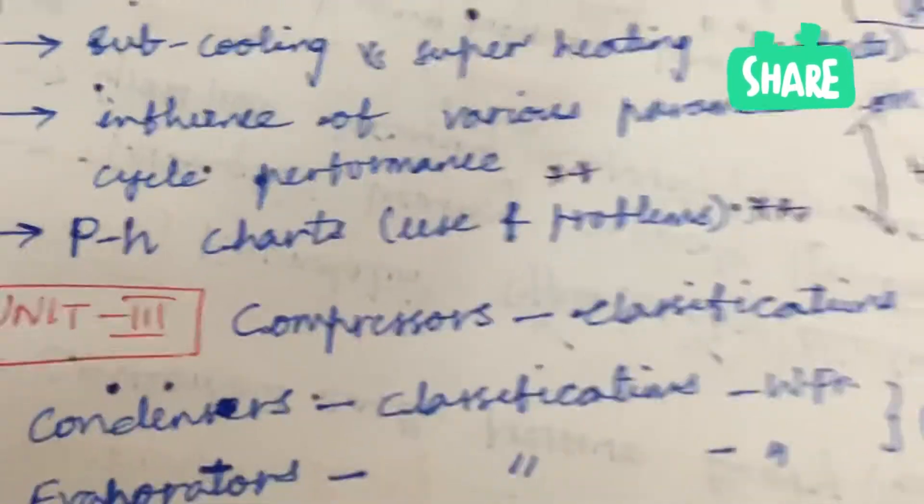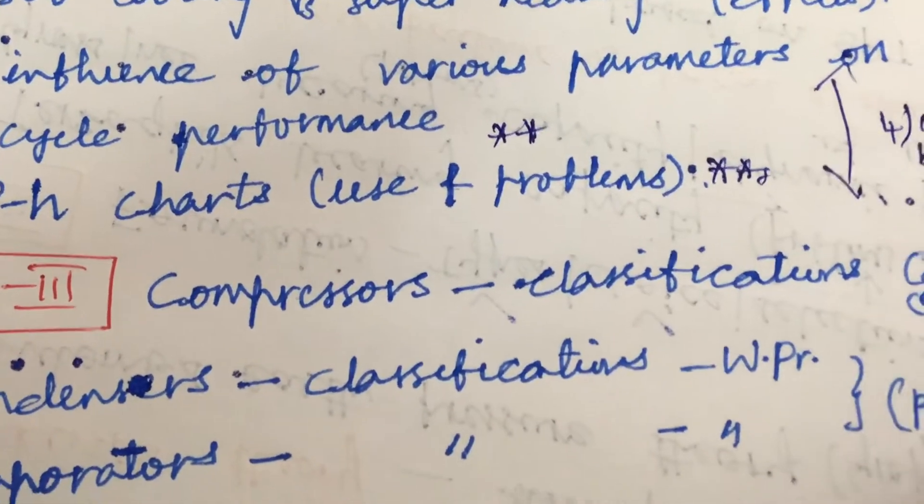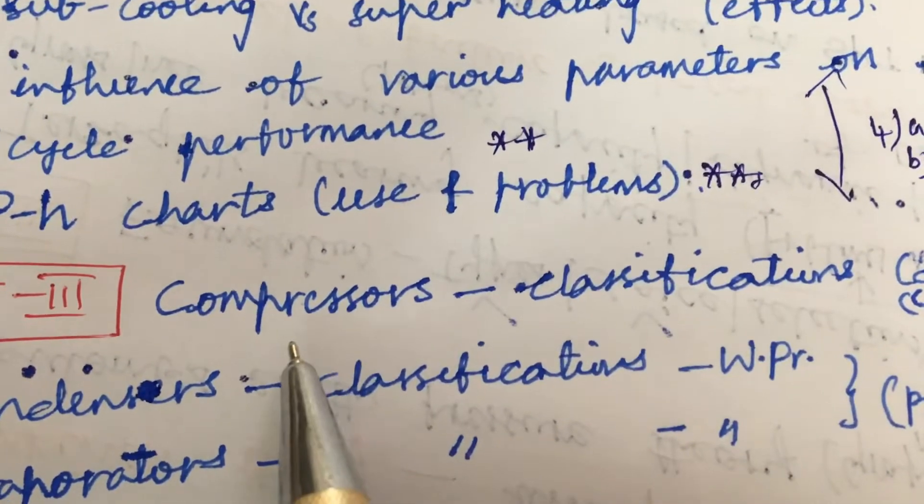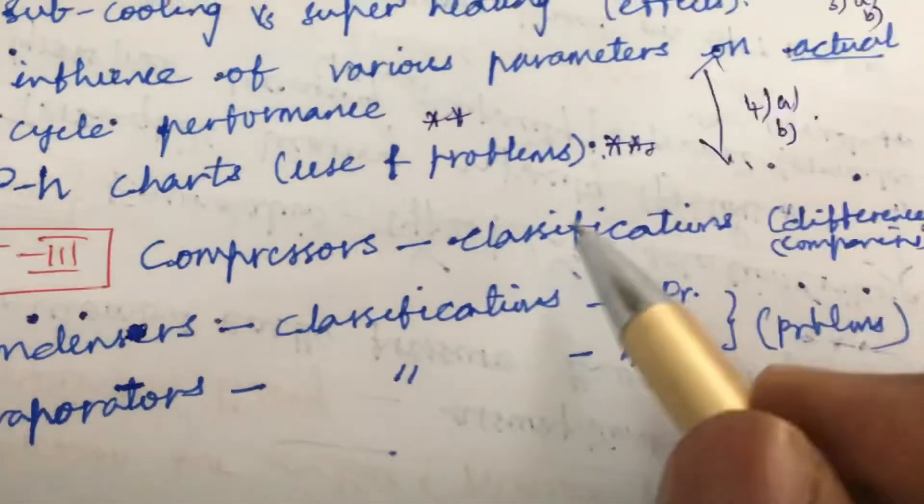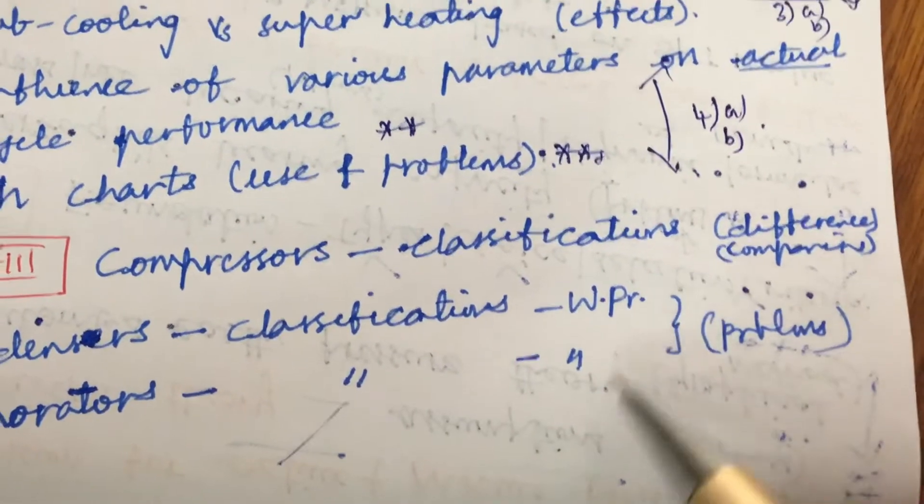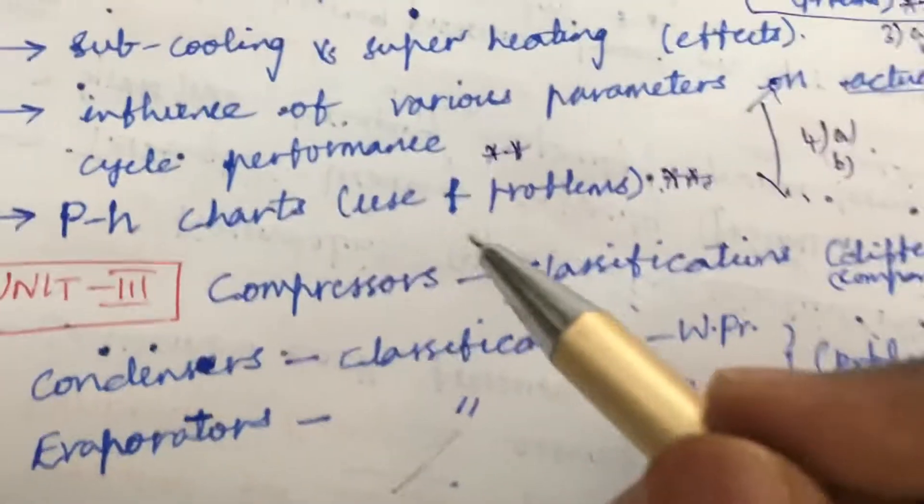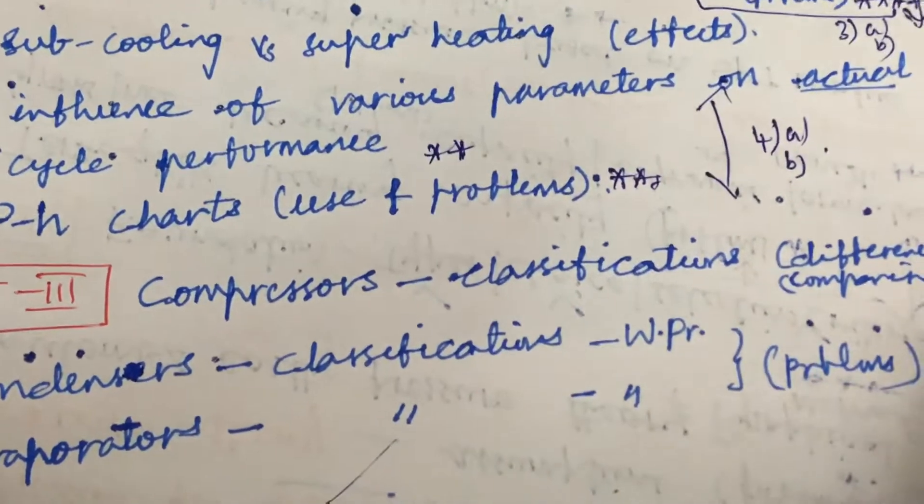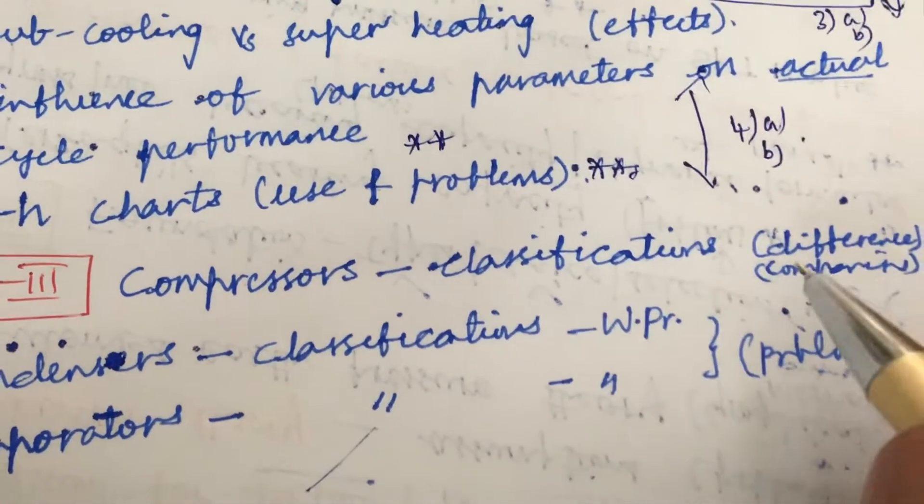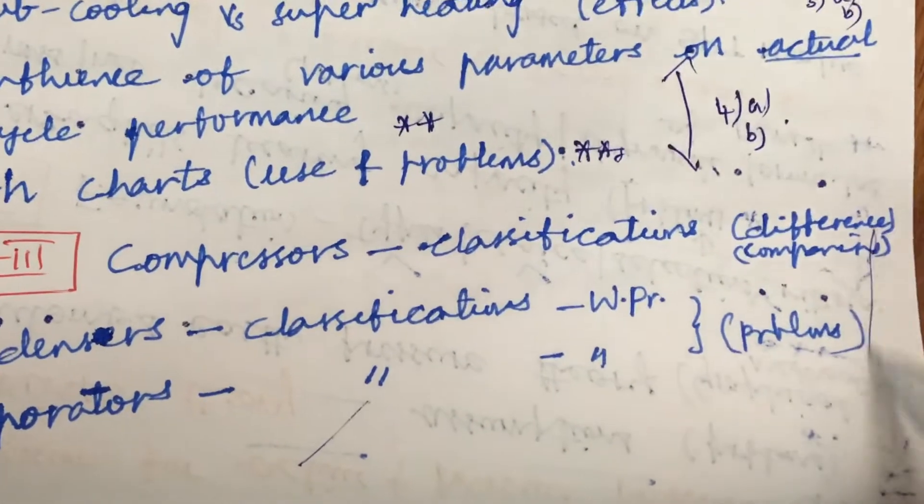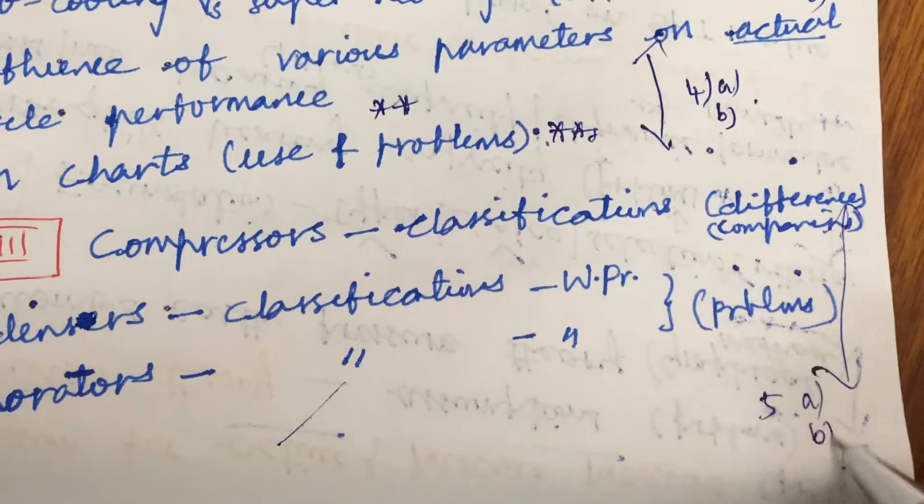Later, unit 3 is all about, I mean 50 percent of the theory as well as the problems, it is all related about the compressors and the condensers and the evaporators, their classifications as well as their working principles. And they may be asking with the comparison of these compressors, condensers, and the evaporators. Make sure to draw the diagrams only in pencil if they are asking a theory part as well as the problems related to this.